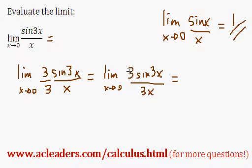And so that's going to give us 3 sine 3x all over 3x. We can actually basically pull this 3 out of the limit because it's just a constant. Now I have this.